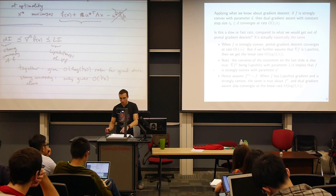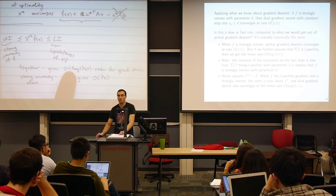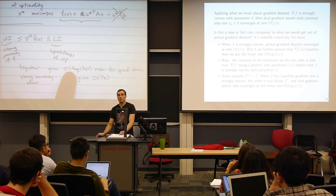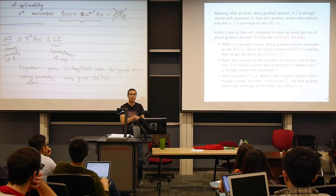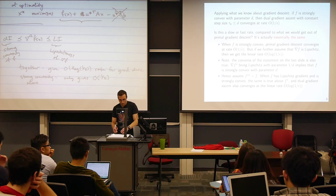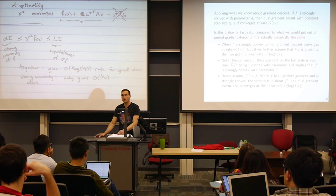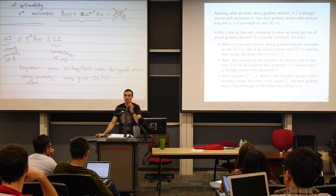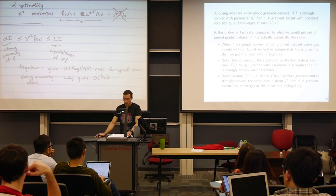Furthermore, if you assume both that grad F is Lipschitz and F is strongly convex, then primal gradient descent gives you log(1/ε). The dual gradient method also gives log(1/ε), because the converse holds: if F has a Lipschitz gradient, that implies F* is strongly convex with parameter 1/(Lipschitz constant). So each property on F implies the reciprocal property on F*. If you assume both on F, you get both on F* and also get the log(1/ε) rate. So in both instances, the dual gradient method converges at the same rate as the primal gradient method — we're not losing anything by going to the dual.